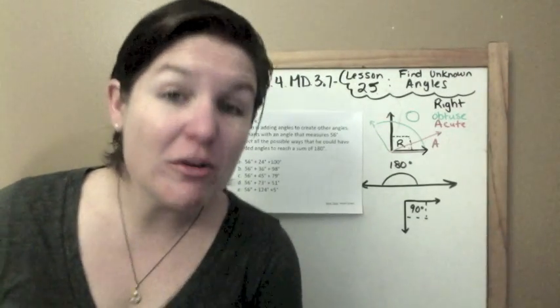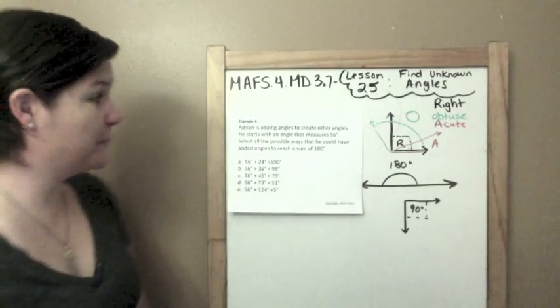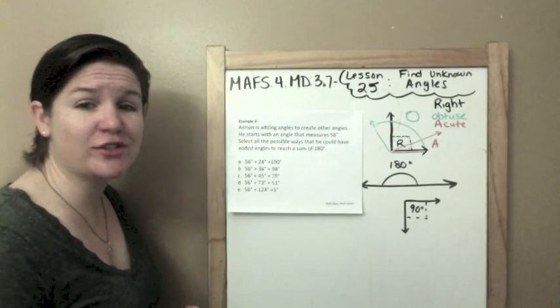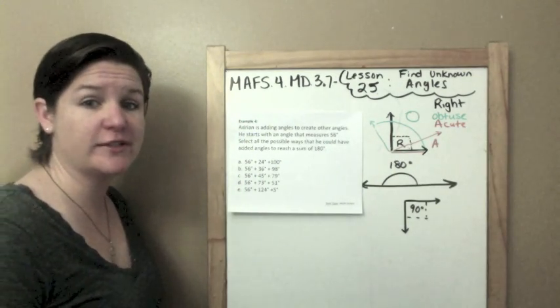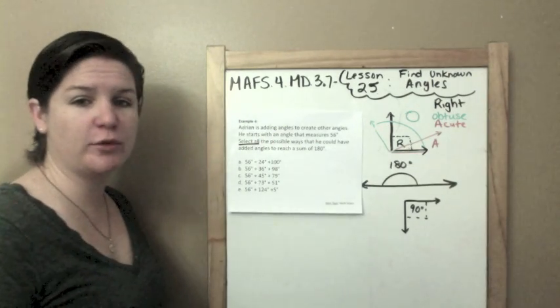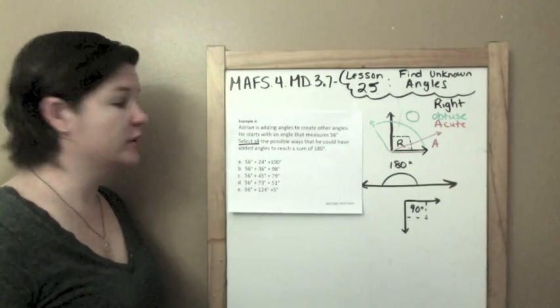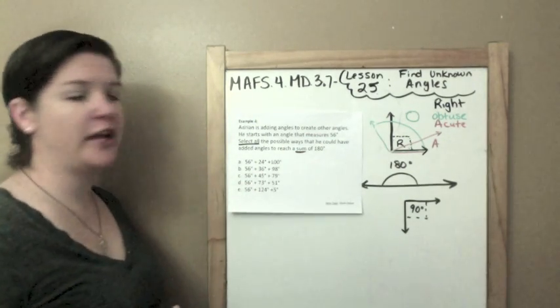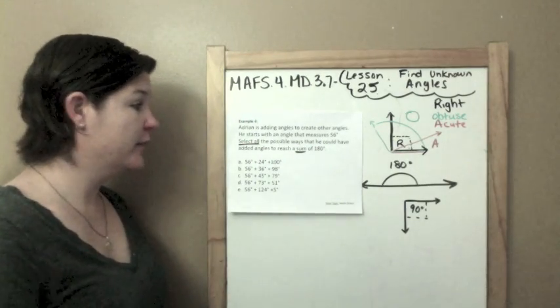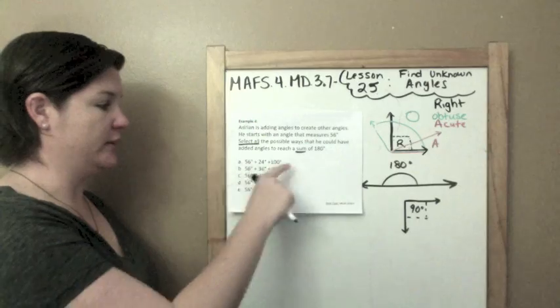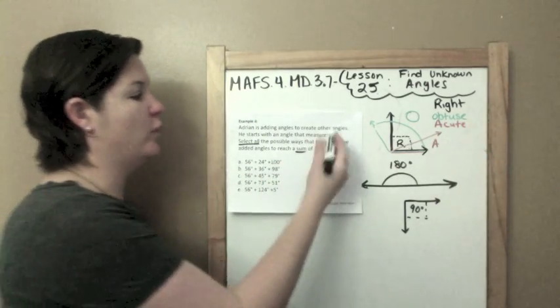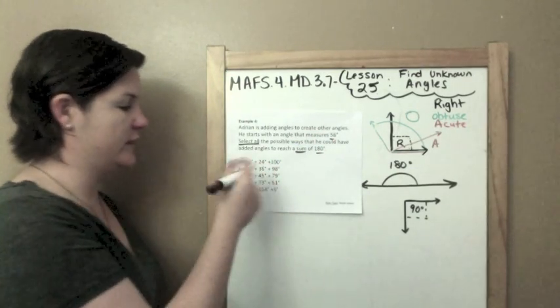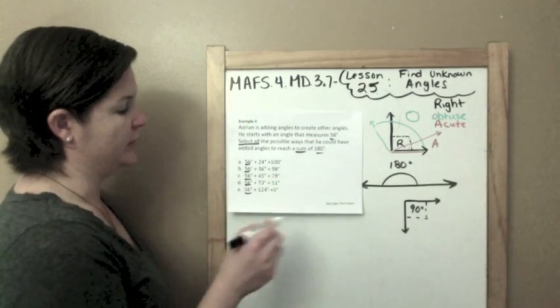Well hot doggy, we're almost finished. This is the last example for today. Example 4. Adrian is adding angles to create other angles. He starts with an angle that measures 56 degrees. Select all the possible ways that he could have added angles to reach a sum of 180 degrees. This is a multi-select item. What I need to do is add all of these. Go through each one and see if I reach a sum of 180 degrees because he starts with 56, and then he adds on.